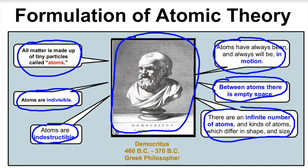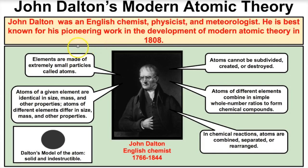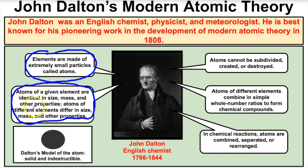Let's fast forward 2,000 years and talk about John Dalton and his atomic theory. Technology evolves, and in 1808 he publishes a paper on his atomic theory. He states that all matter is made up of tiny little particles called atoms — just like Democritus. Furthermore, he states that atoms of a given element are identical in size, mass, and other properties. Today, we know this is not true because of something called isotopes.